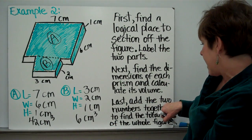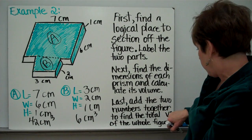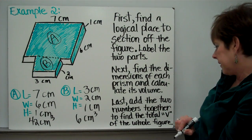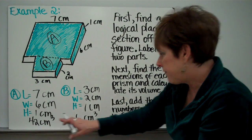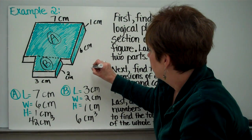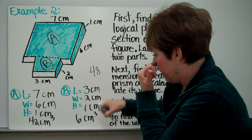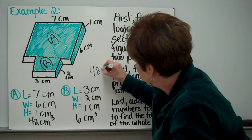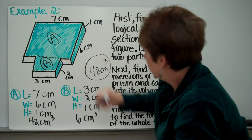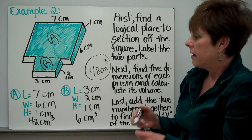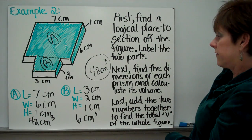We're going to add them together: 42 plus six is 48 cubic centimeters. It says last, add the two numbers together to find the total volume of the whole figure. So 42 plus six is 48 cubic centimeters. Much easier to do when you section it off.